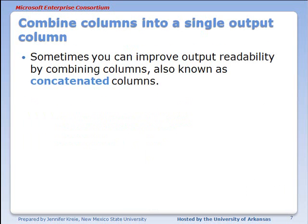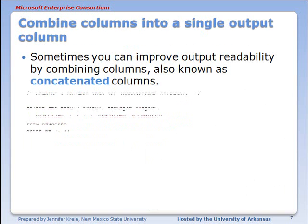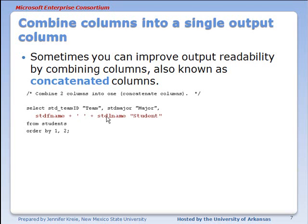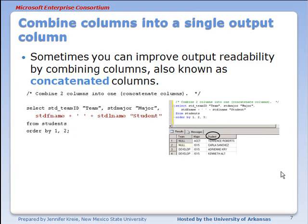You can also combine columns into a single column - this is called concatenating columns. In our example we're going to take the student first name, plus in single quotes a space to separate the first name from the last name, plus student last name, and then the column alias will be student. We're doing an ORDER BY column 1 which is student team and column 2 which is student major. So now we see team, major, and student with the values in the two fields combined into a single column.